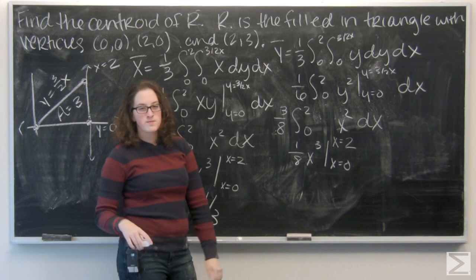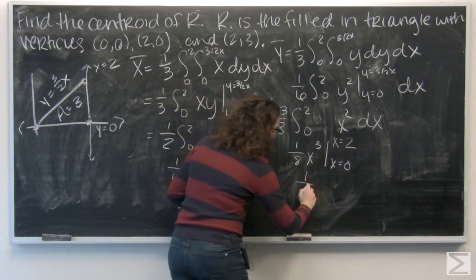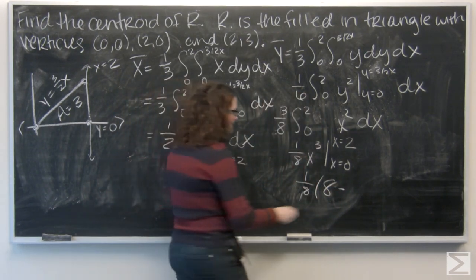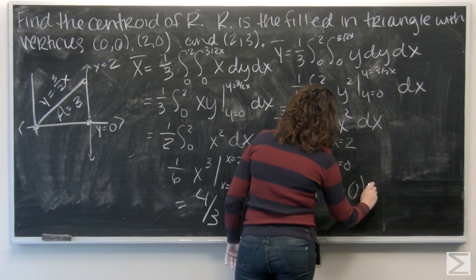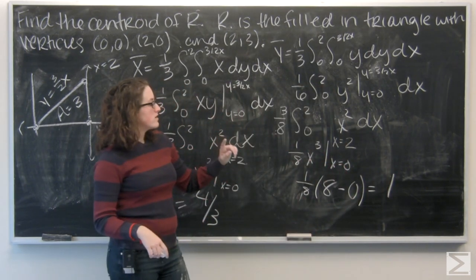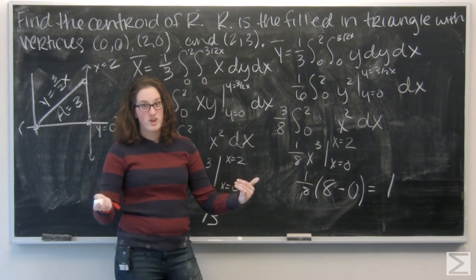Let's plug in 2 first. 2 cubed is going to give me 8. And, 0 cubed is going to give me 0. So, I actually get my y bar to be 1. Right? 1 eighth times 8 makes 1. So, now let's just write this as an ordered pair.